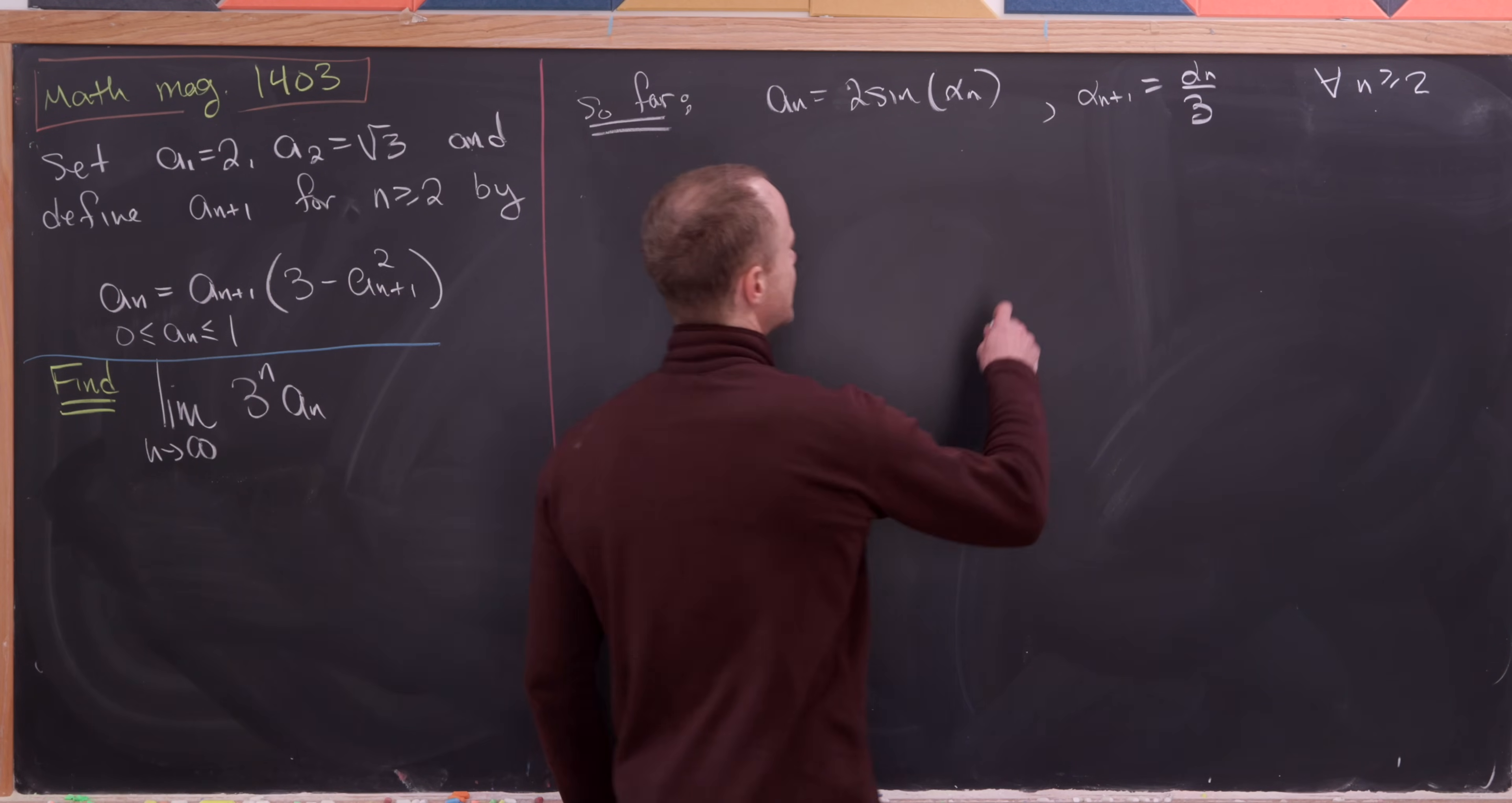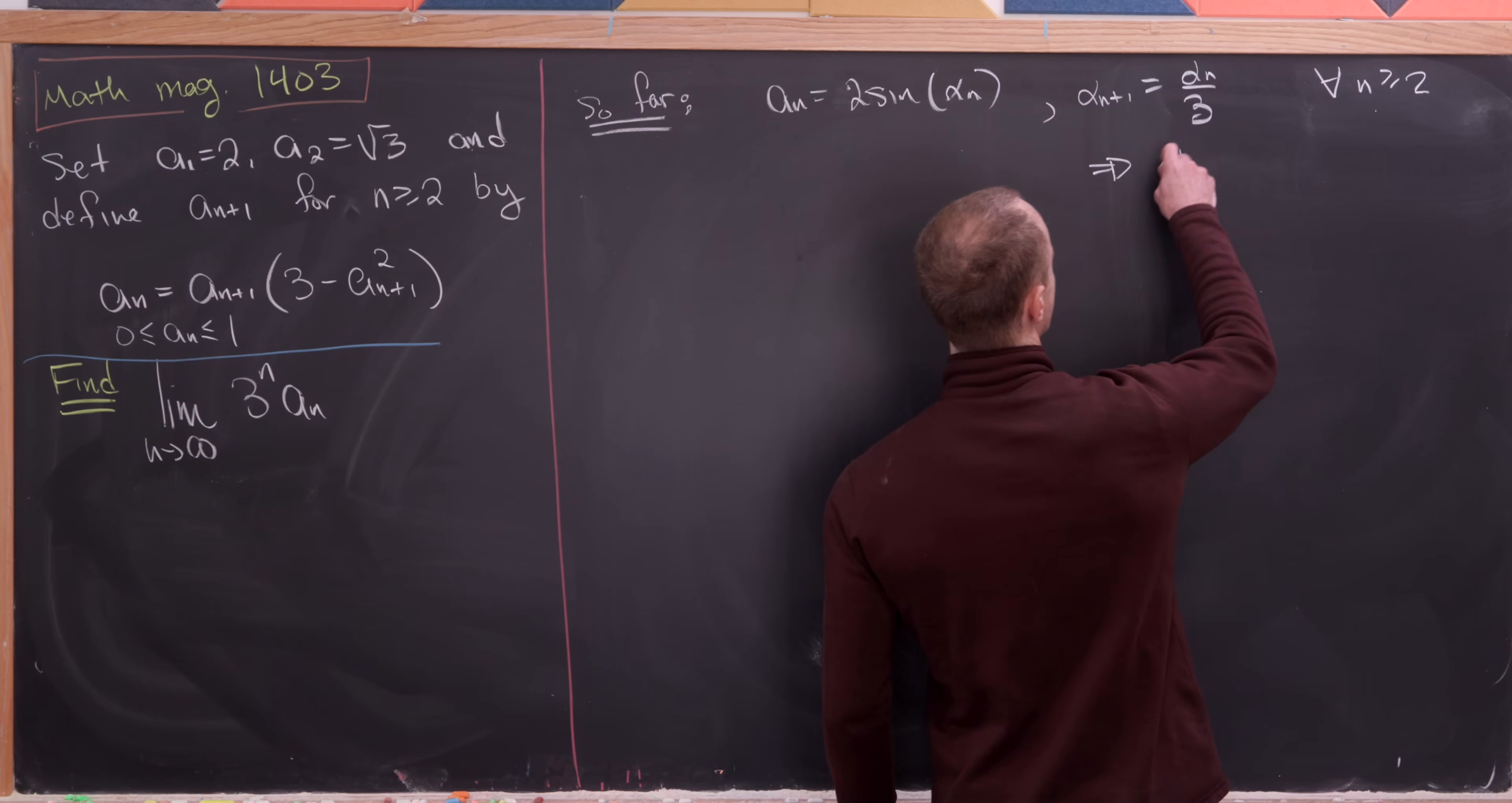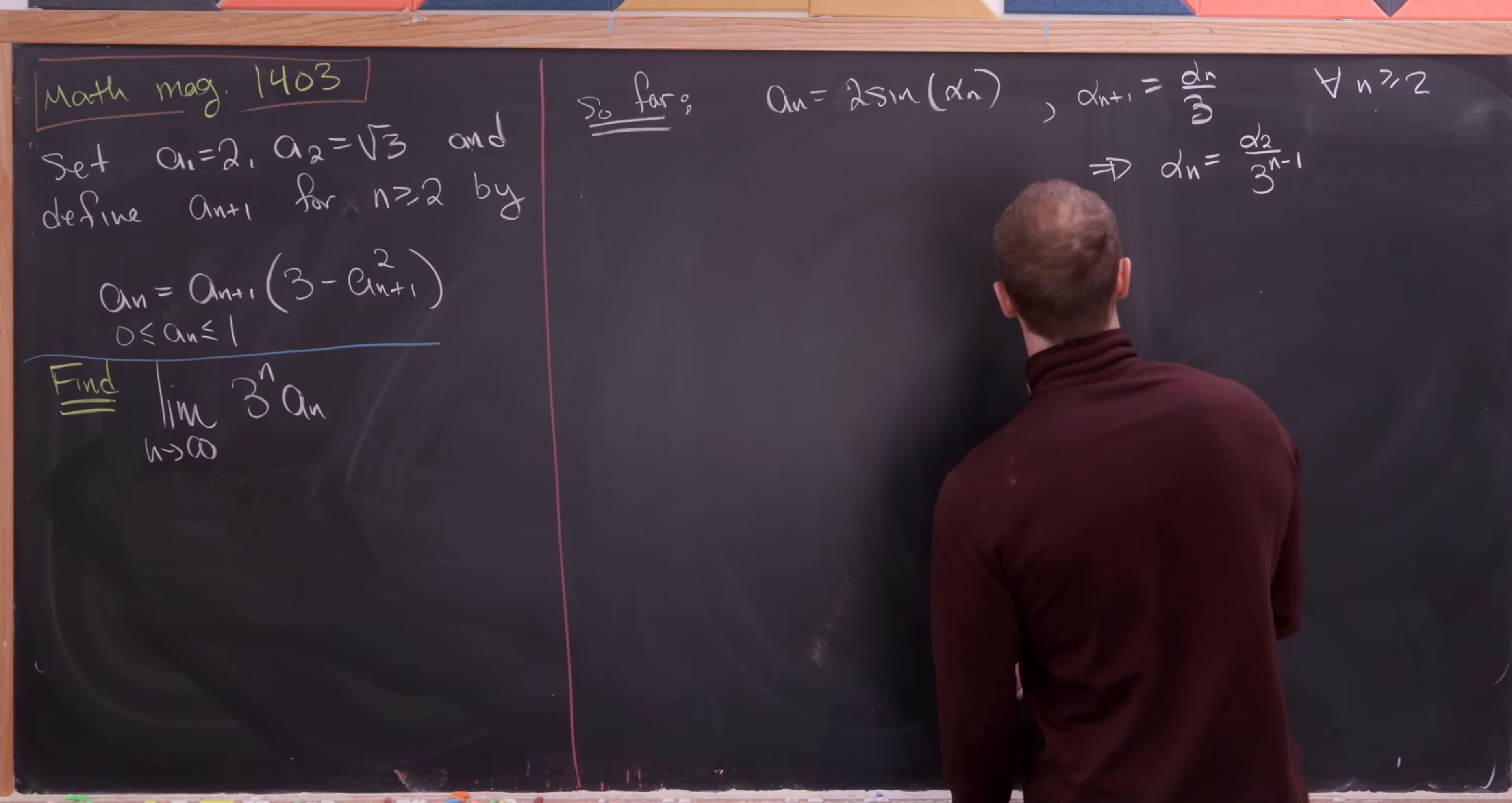But now observe that we can keep applying this recursion right here and what we'll see is in the end alpha n will be equal to alpha sub 2 over, let's see, it's going to be 3 to the n minus 1.